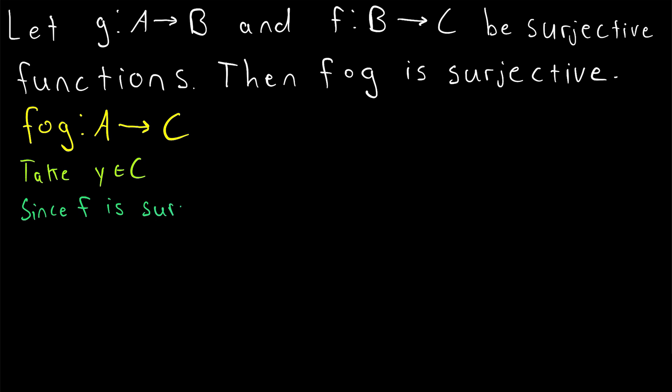And we know there is such an element because the function F is assumed to be surjective. So since F is surjective, we know there exists some element, we'll say X in its domain B, that's the domain of F. There exists X in B such that F of X is equal to Y. So again, remember that we're assuming F and G are surjective functions. Thus, given any element in the codomain of F, we know there exists an element in the domain that F maps to that element Y in the codomain.